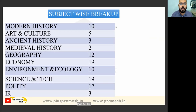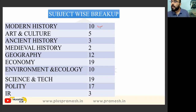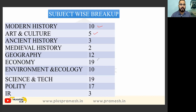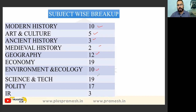First of all, let us analyze the breakup of questions this year. Around 10 questions were asked from modern history, 5 from art and culture, 2 ancient history, 2 medieval history. Geography is a little high this year — 12 questions. Economy 19 questions, environment and ecology 10, science and technology 19 questions, polity 17 questions, and international relations 3 questions.